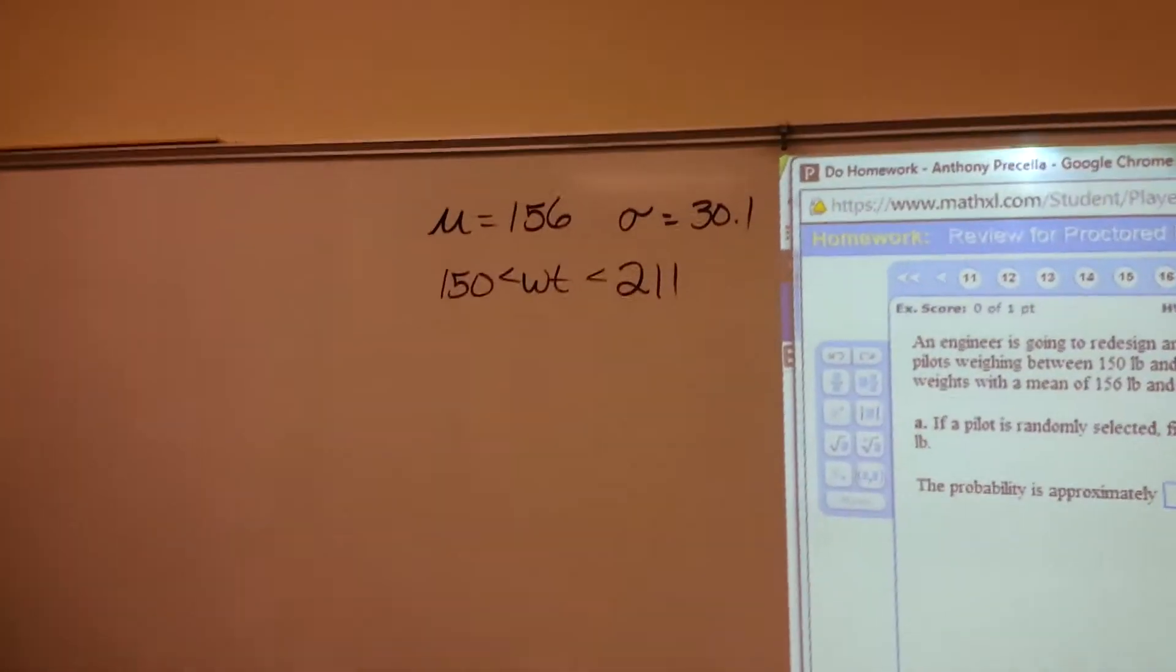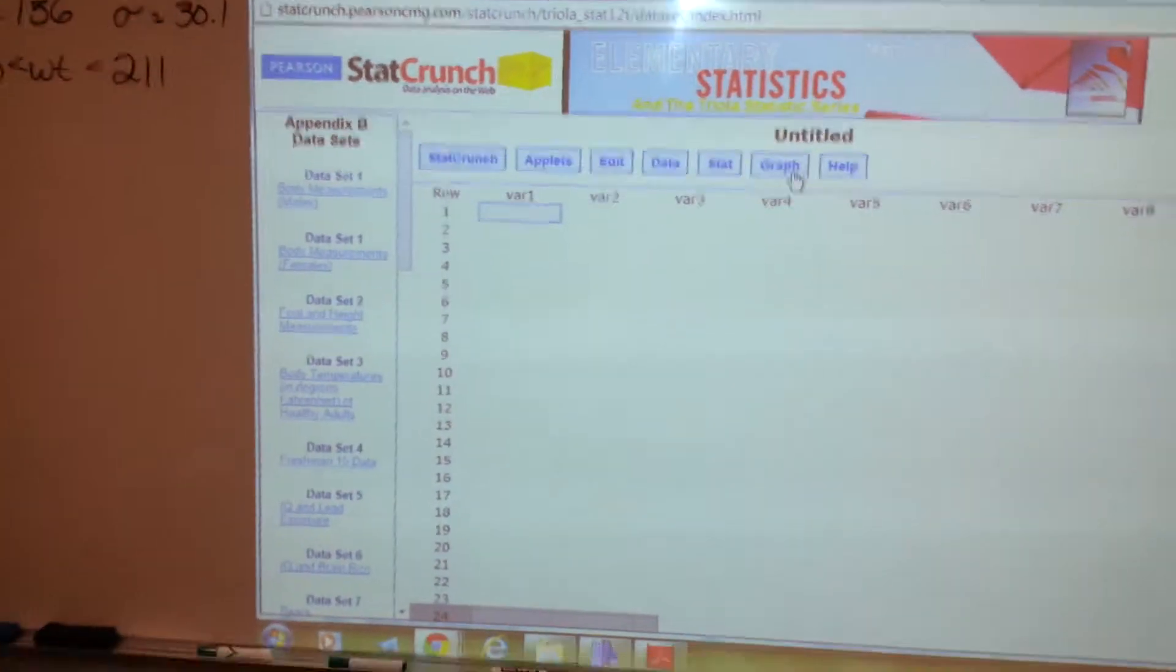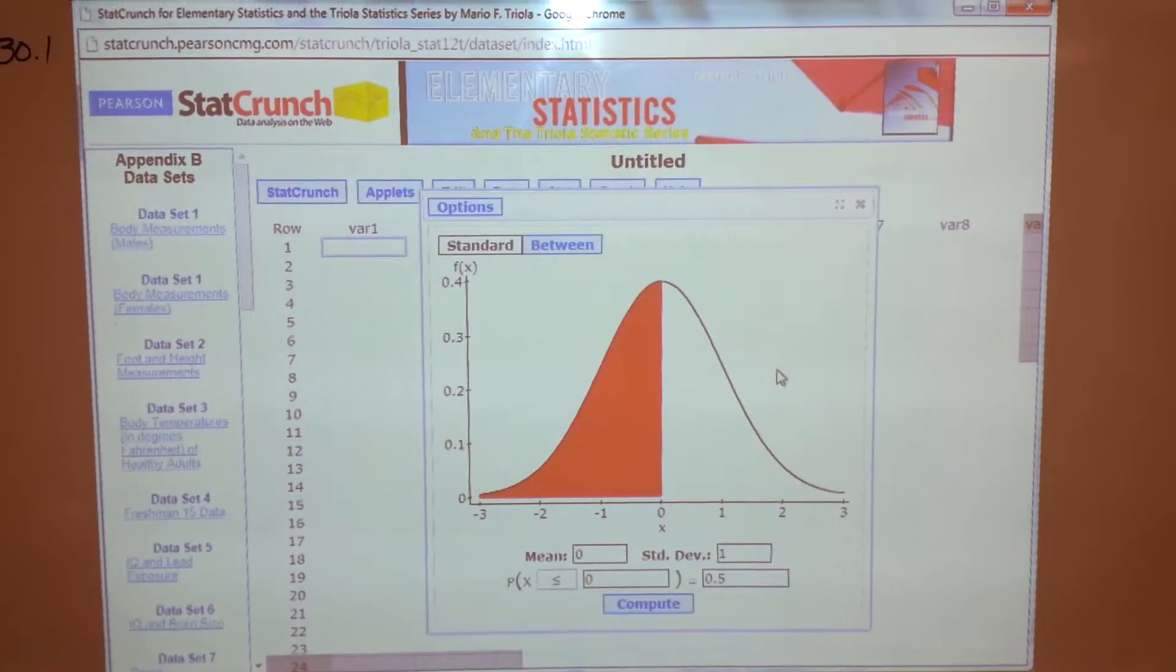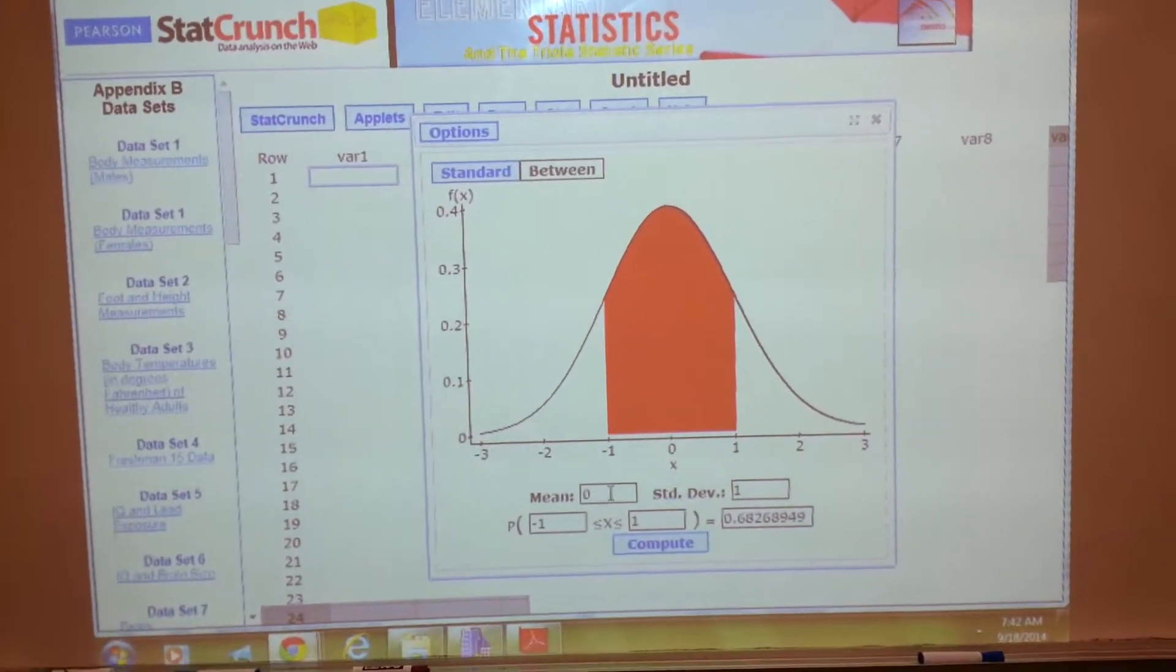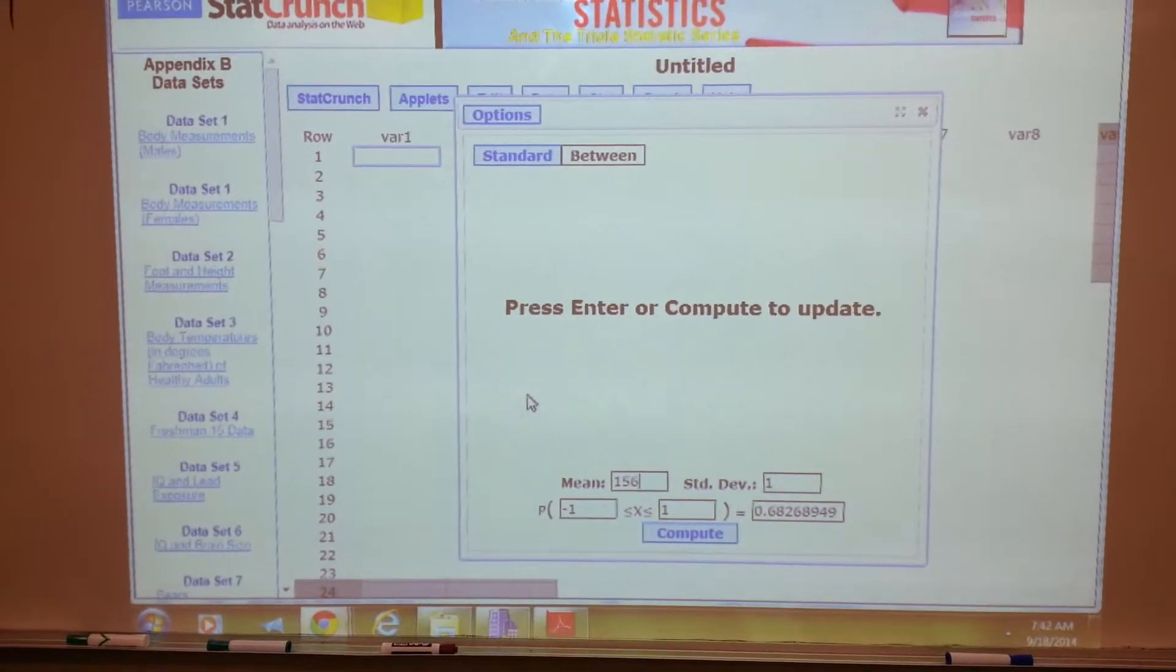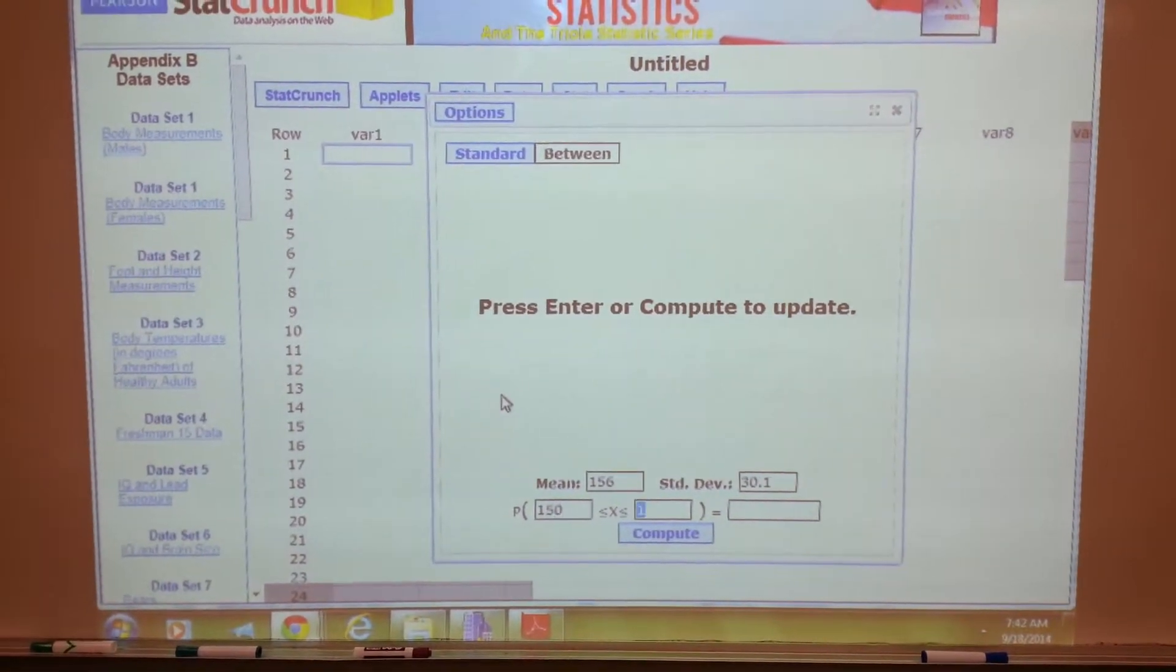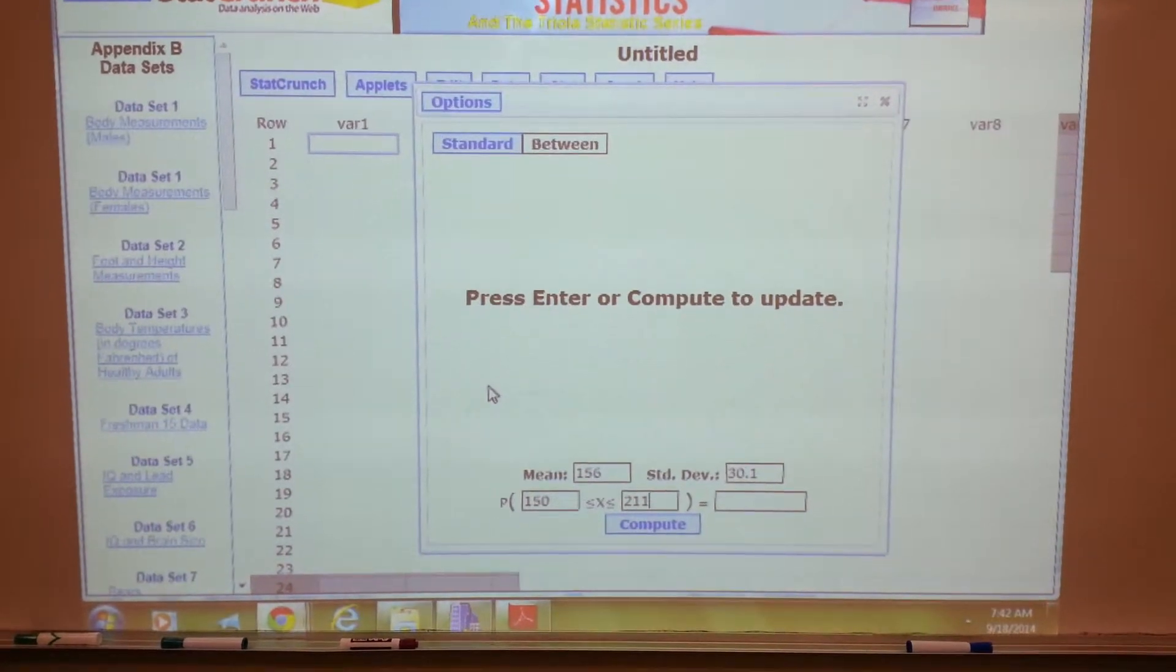Pull up StatCrunch. This is another one of those between ones. Stat, Calculator, Normal. We've got a between. Let's come down here and start filling in: 156, 30.1. The weight is between 150 and 211.